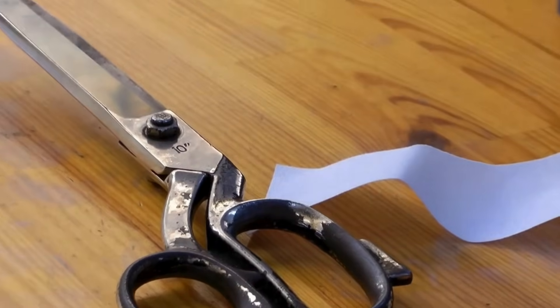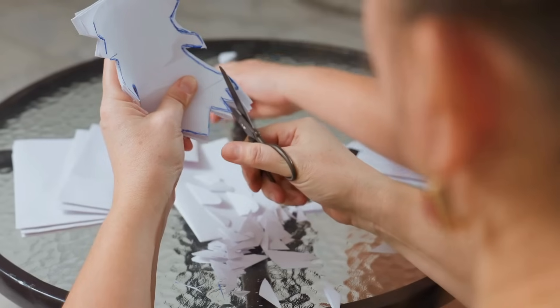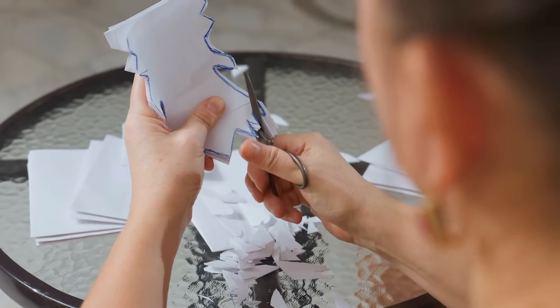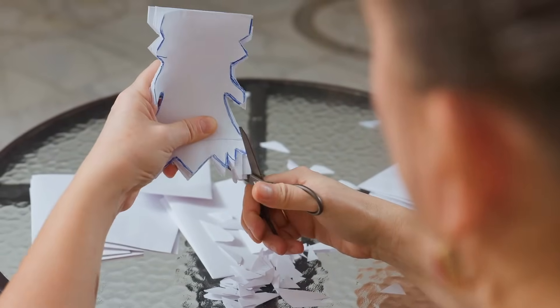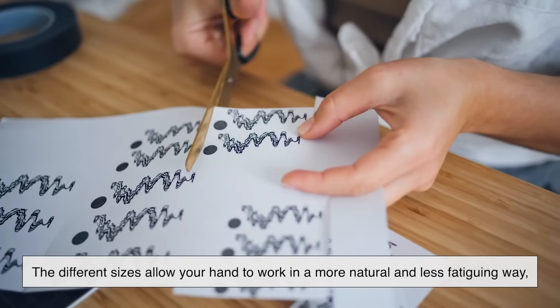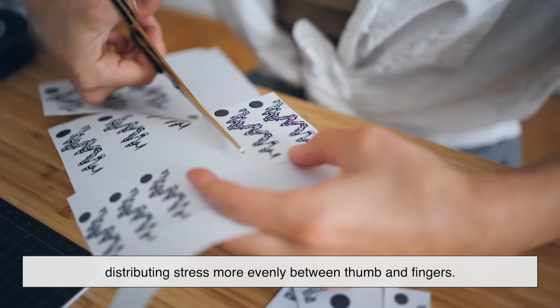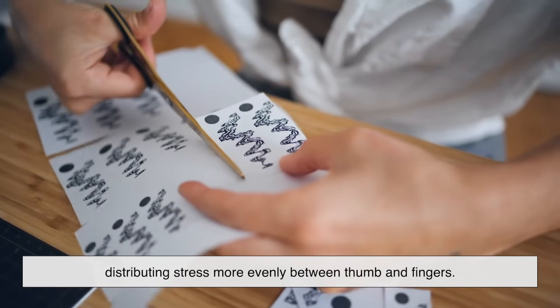This is especially important in tasks that require precision and endurance. Try using scissors with two equally small loops for an extended period. Your hand will cramp up before you get anything done. The different sizes allow your hand to work in a more natural and less fatiguing way, distributing stress more evenly between thumb and fingers.